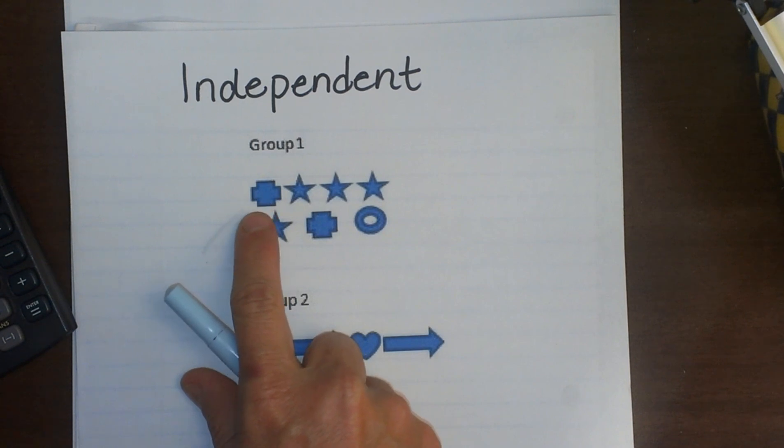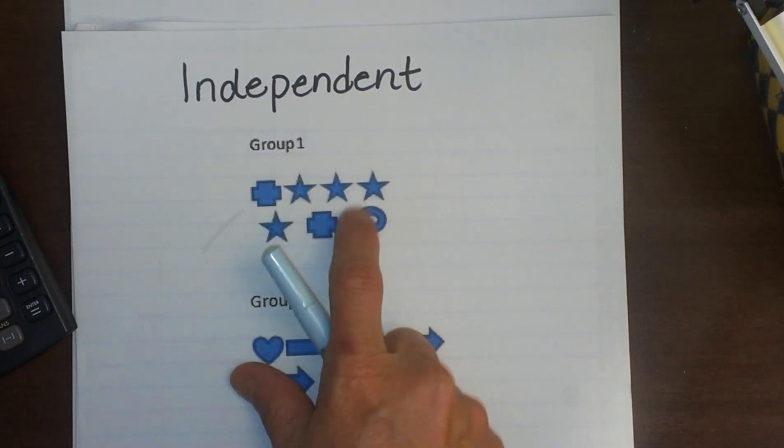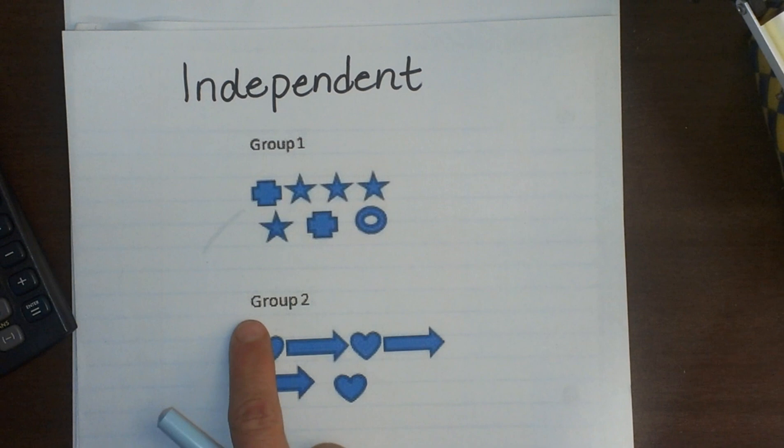Group 1 has a cross, four stars, and a circle. Group 2 has three hearts and three arrows.